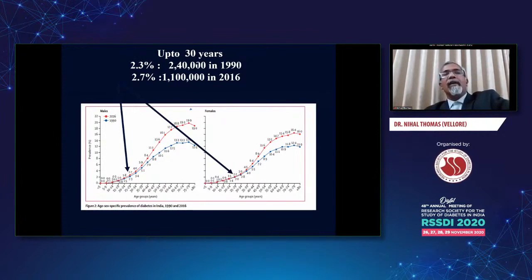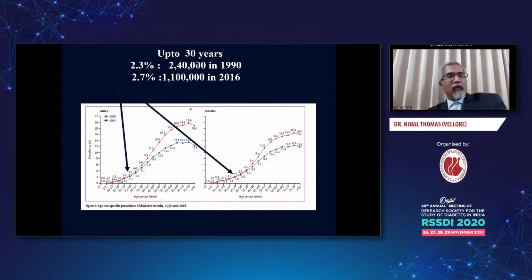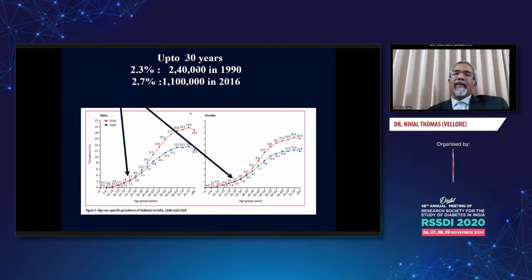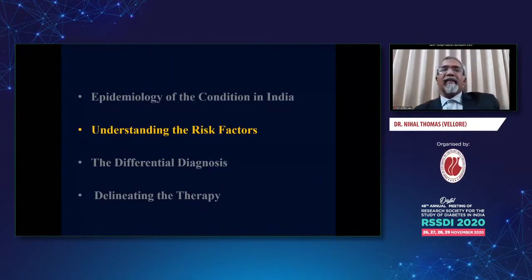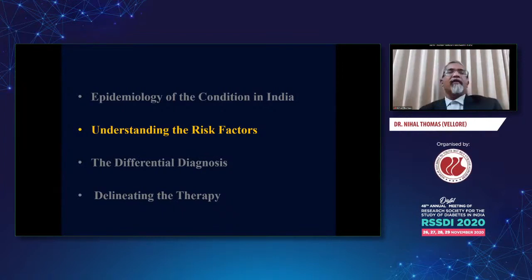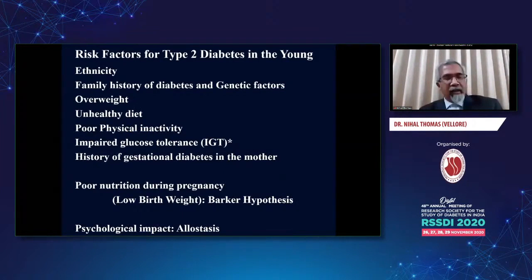This is approaching approximately 1.1 million cases at this point of time when we are talking about young patients with type 2 diabetes. Of course there is a group which may be other than type 2 diabetes — that is the important differential diagnosis I will be talking about. Let's understand the risk factors for this condition. There are big conditions considered as risk factors, but I would like to talk about a few in particular.